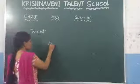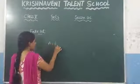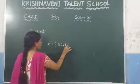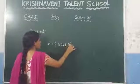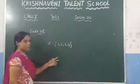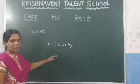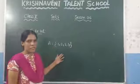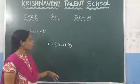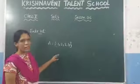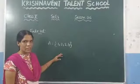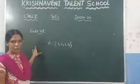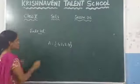Let us consider an example: the set {1, 2, 3, 4}. Here, how many elements are there? 4 elements are there. We can say that it is a finite set because we can count the number of elements in the set. So we call it a finite set.